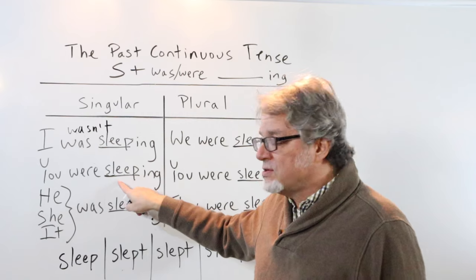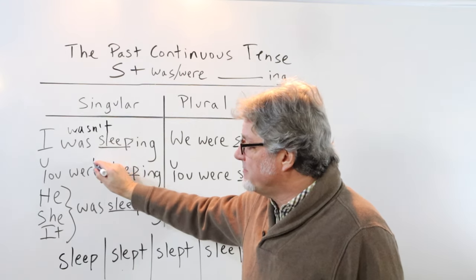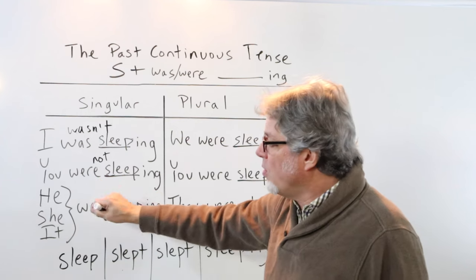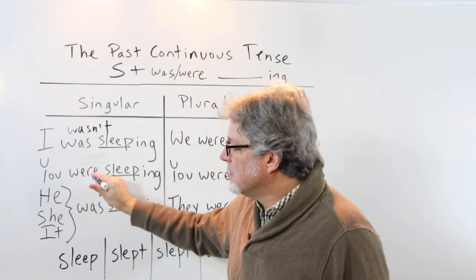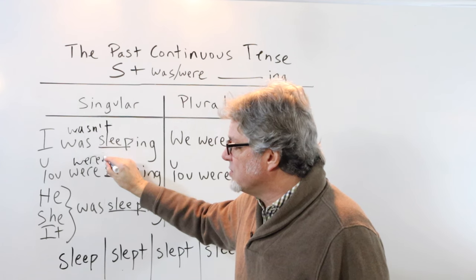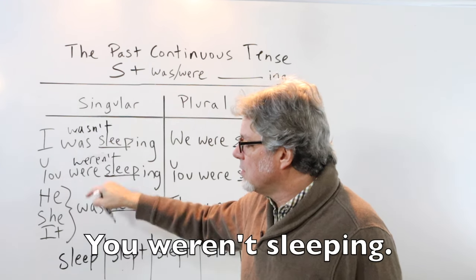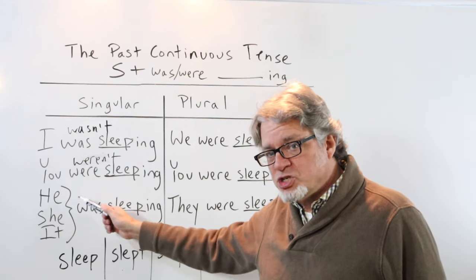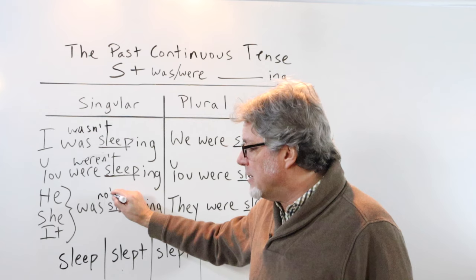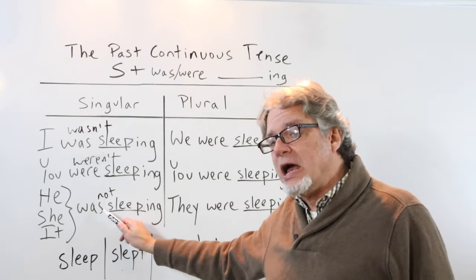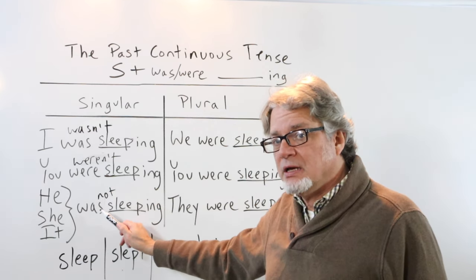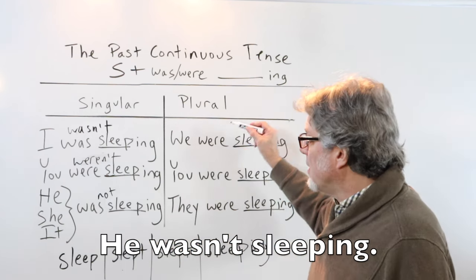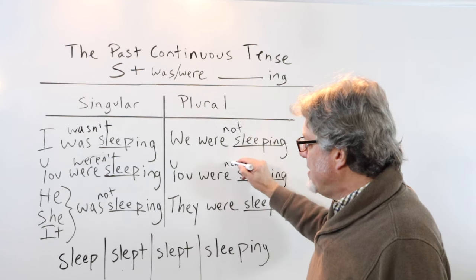You were sleeping — negative: you were not sleeping, or with the contraction, you weren't sleeping. He, she, it — not goes between was and the verb; the contraction is wasn't: he wasn't sleeping. The same applies to the other plural subjects.